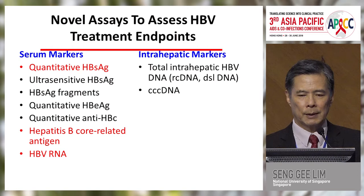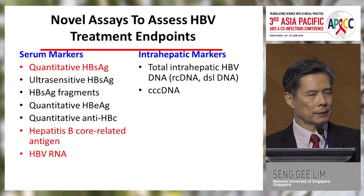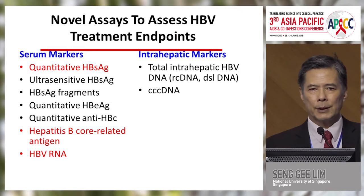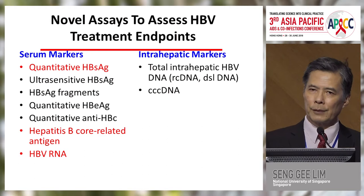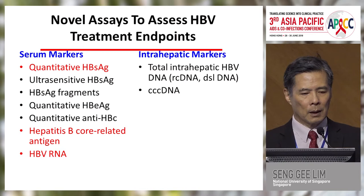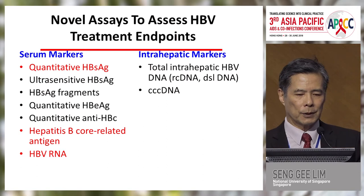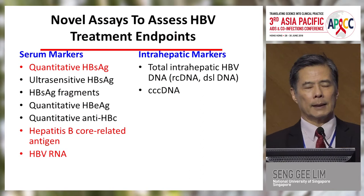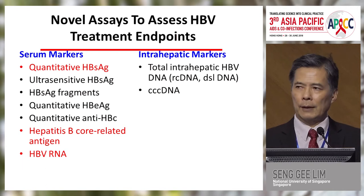Here I've listed some novel assays used to assess HBV treatment endpoints. Ideally, intrahepatic markers are the best, such as total HBV DNA or cccDNA, but these require liver biopsy and most clinicians are moving away from this. However, for research purposes, liver biopsies are still required to understand the virology and immunology in the liver. Nonetheless, serum markers have become of considerable interest, such as quantitative s-antigen levels. The current s-antigen test is qualitative — positive or negative — but you can quantify it with a simple ELISA methodology, giving data on the replicative level of s-antigen.